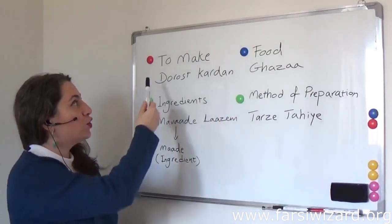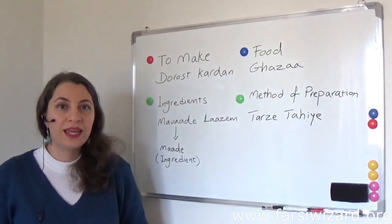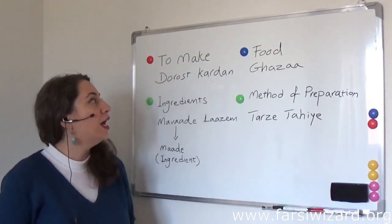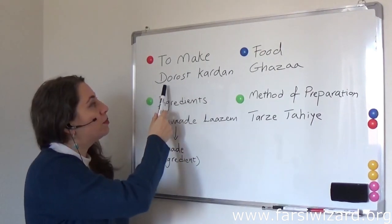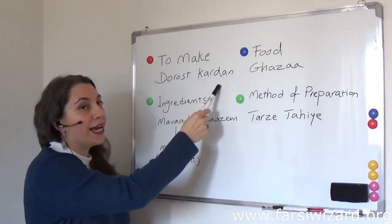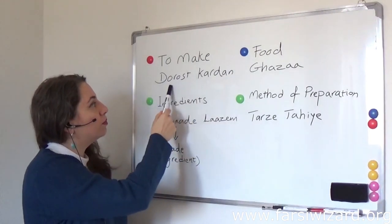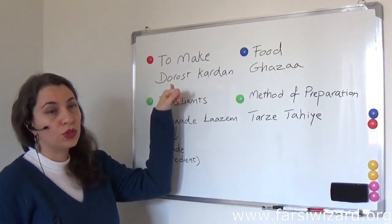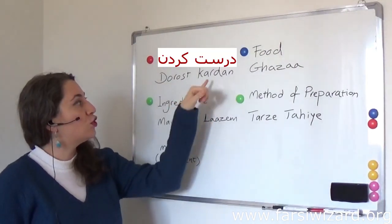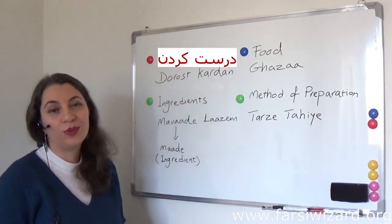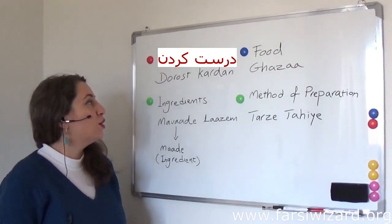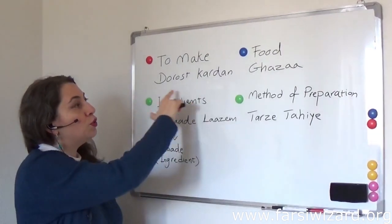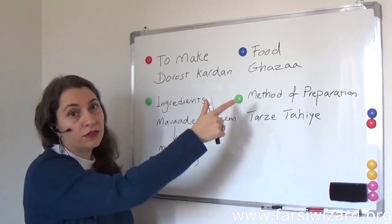Now how do we say 'to make'? The verb 'to make' is a compound verb. As you may remember from many of the previous videos I made about compound verbs, here we have 'kardan,' which means 'to do,' plus a noun. The noun here is 'dorost.' So 'dorost kardan' means 'to do right' — 'dorost' means right or correct — so basically 'dorost kardan' means to make or to prepare. We use this verb in the context of cooking.